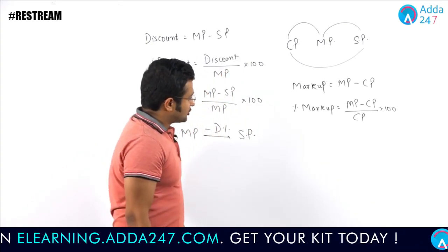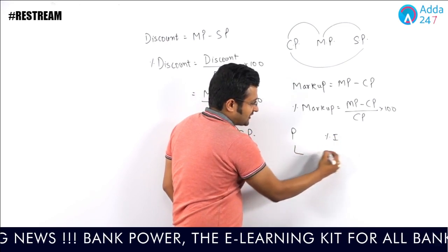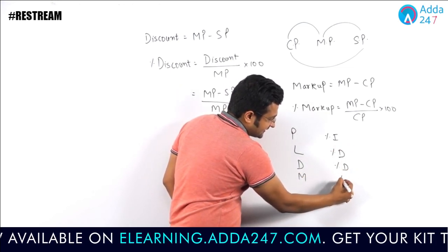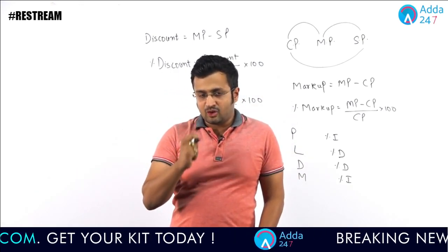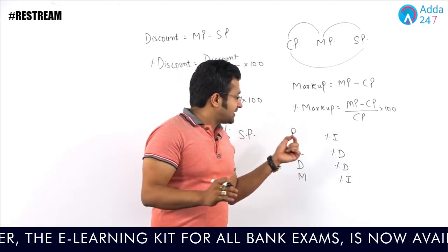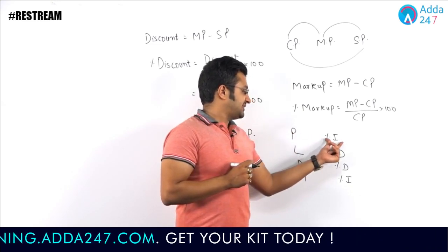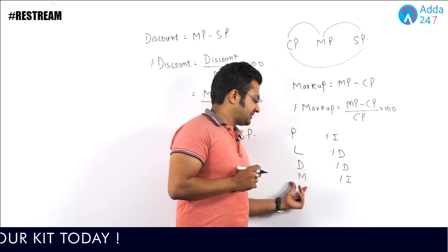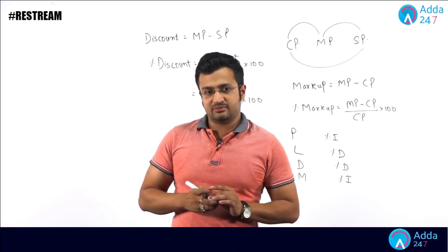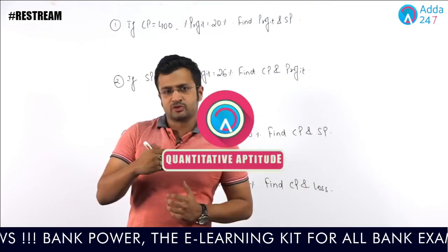Markup is a percentage increase. So to summarize: profit is percentage increase, loss is percentage decrease, discount is percentage decrease, and markup is percentage increase. If you can correlate profit, loss, discount, and markup with percentage increase and decrease, it will be very easy to solve problems — you do not need to memorize all the formulas separately.